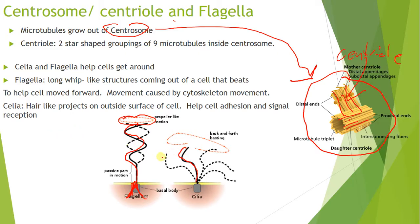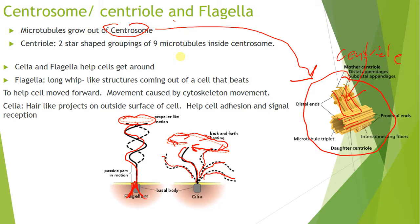Cilia are smaller hair-like projections that move in a similar way to flagella, but function more as receptors — detecting movement outside the cell and helping the cell adhere to its surroundings. That covers the organelles briefly. Use your book and your study sheet to review the structures and functions of these organelles.